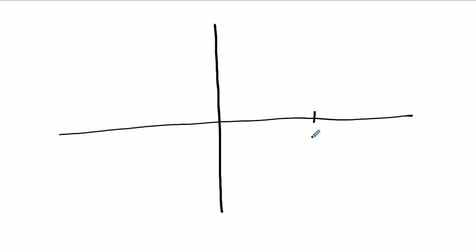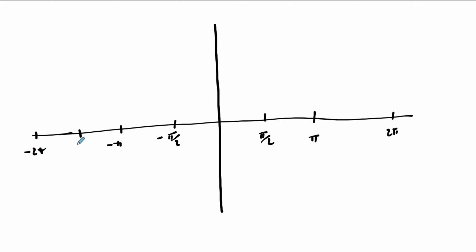Here's me drawing the sine wave. This would be pi radians, 2 pi. Let's make this pi over 2, negative pi over 2, negative pi, negative 3 pi over 2, and negative 2 pi. So our sine wave starts at 0 and varies between positive 1 and negative 1. It's going to climb and reach 1 at pi over 2, then 0, negative 1, and back to 0.